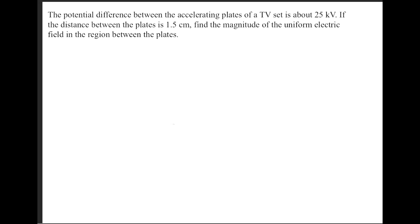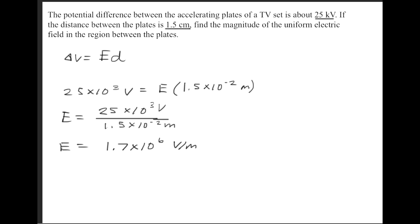To solve this question we're going to use the formula that voltage is equal to the electric field times the distance. We're given that the voltage is 25 kilovolts and the separation distance is 1.5 centimeters. Now we'll go ahead and solve for E and we'll get 1.7 times 10 to the 6 volts per meter.